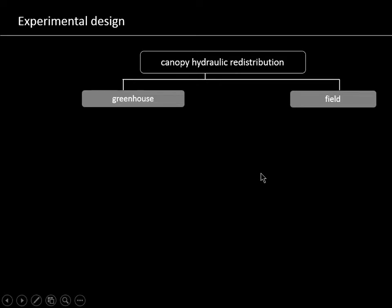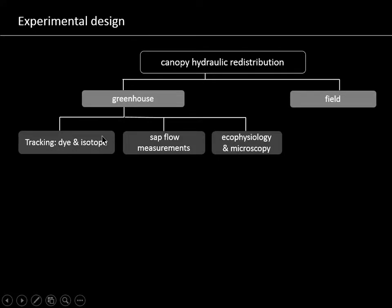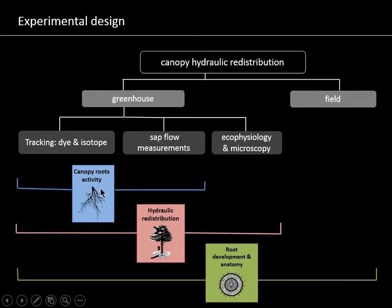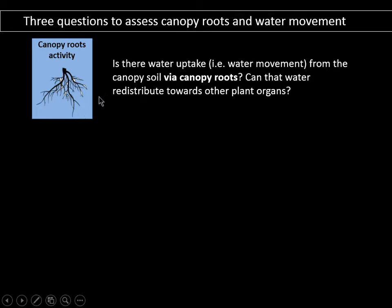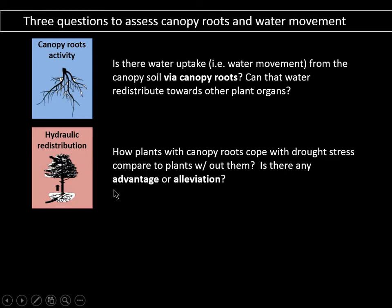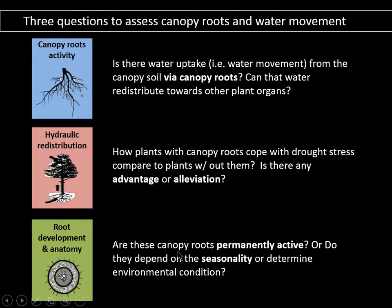This is the experimental design. This project has a greenhouse and a field part. The greenhouse experiments include tracking water with dye and isotopes, sap flow measurements, and some ecophysiological and microscopic measurements. Today, I'm going to focus on two questions: canopy root activity and hydraulic redistribution. My first question is: is there water uptake and water movement from the canopy soil via canopy roots? Can they redistribute water towards other plant organs? The second question is: how do plants with canopy roots cope with drought stress compared to plants without canopy roots — is there an advantage or alleviation? And the last question is: are those canopy roots permanently active, or do they depend on seasonality or environmental conditions?